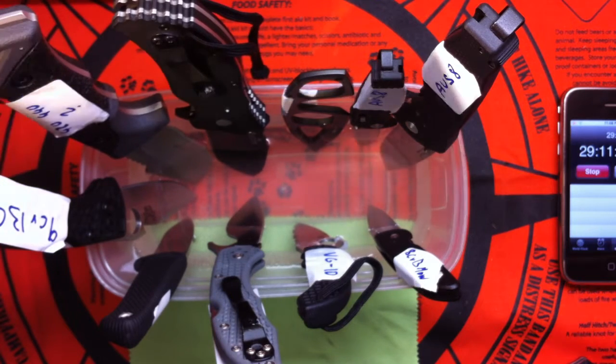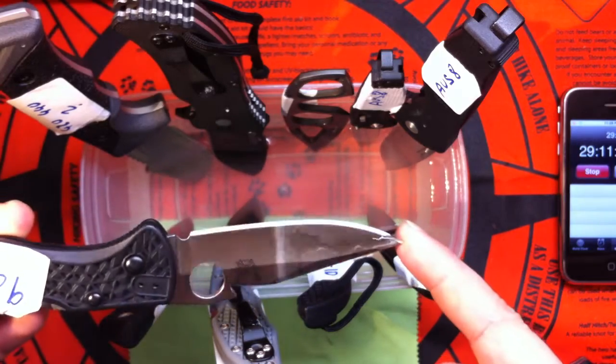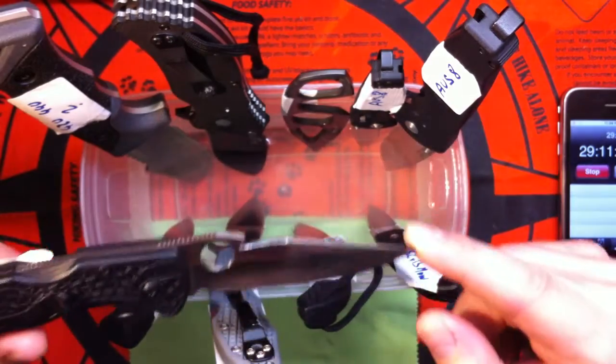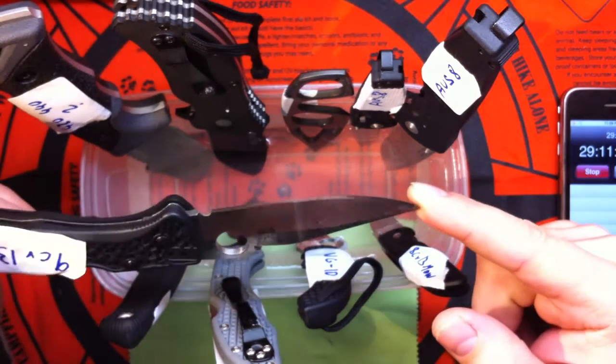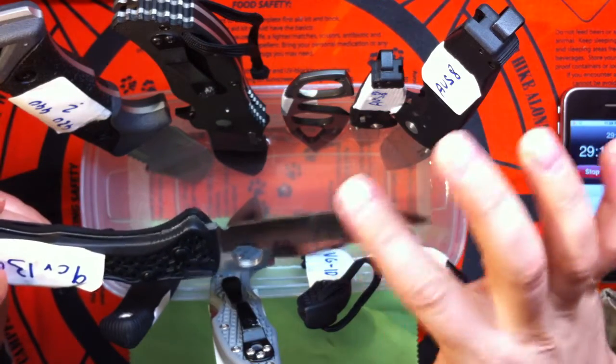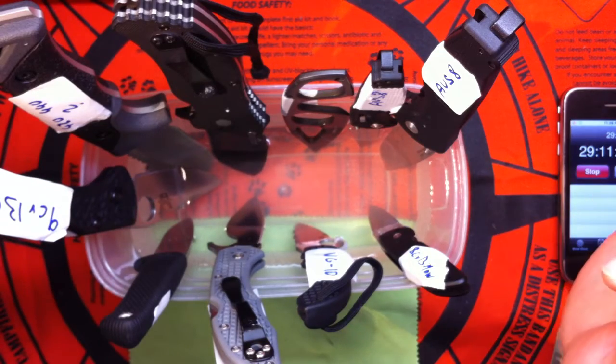The Benchmade 9cr13comov has only a very small little rust spot, so I'm gonna keep that one in also just for the heck of it. I'm curious.